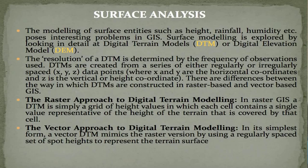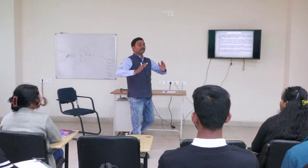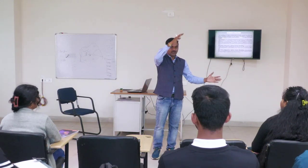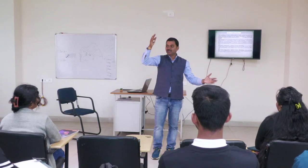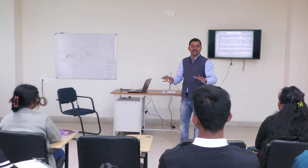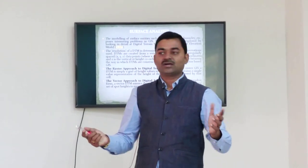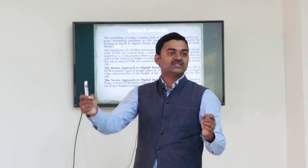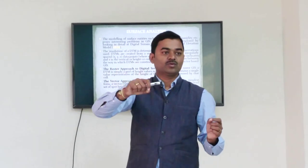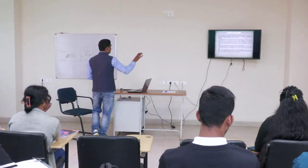Surface analysis shows how your physiography looks — digital elevation model, DTM (digital terrain model), DEM (digital elevation model). How much elevation, whether it is valley land, plain land, or hilly area — exactly how it looks, the entire geographical study area can be analyzed using surface analysis. We have both raster and vector models, like TIN — Triangulated Irregular Network — which is a vector surface analysis tool generated using contours. A contour is an imaginary line of equal elevation, and TIN is generated in vector form using the surface data.